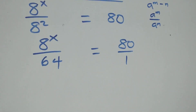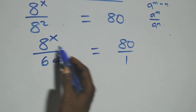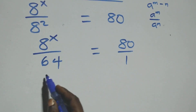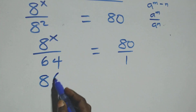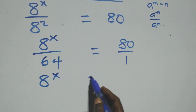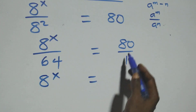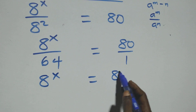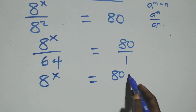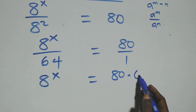Next step: we cross multiply. 8 raised to power x times 1 is the same thing as 8 raised to power x, and this equals 80 times 64.